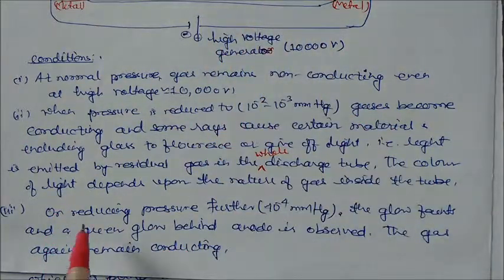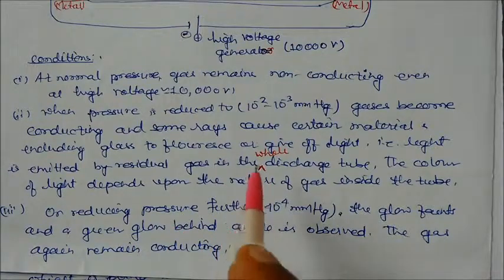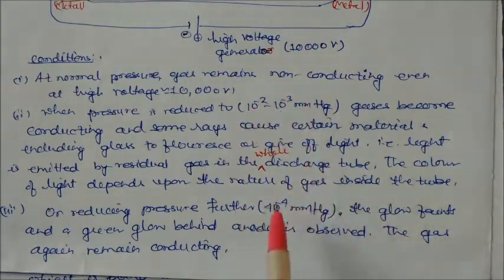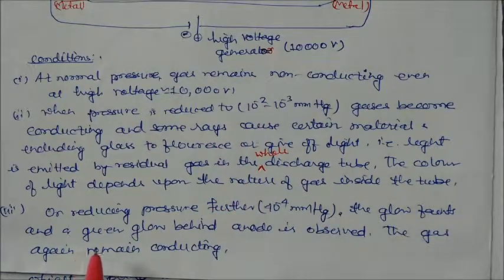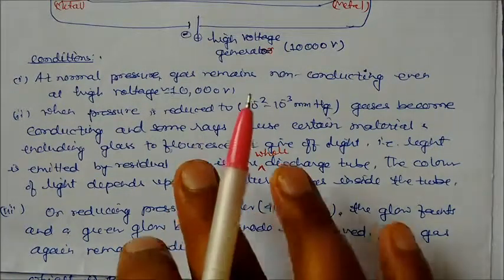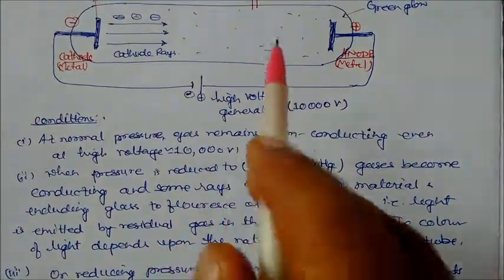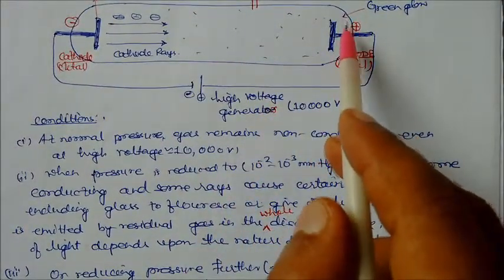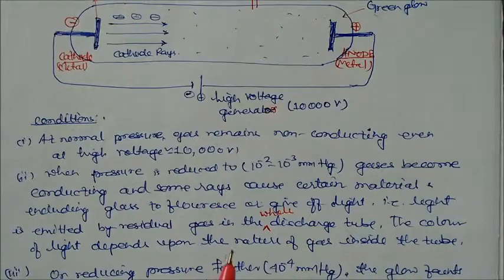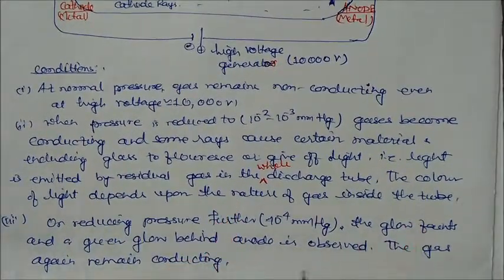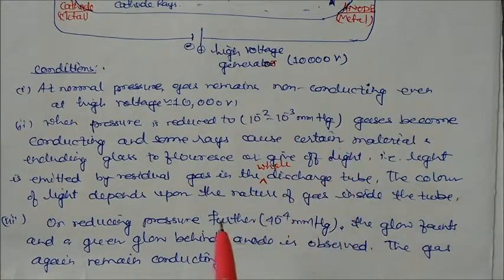If you reduce the pressure further — initially it was 10⁻² and now to 10⁻⁴, meaning 1 by 10,000 — the glow fades initially, but then a green glow is observed at the back of the tube. The gas still remains conducting. So under reduced pressure, gas becomes conducting — this is our main observation.